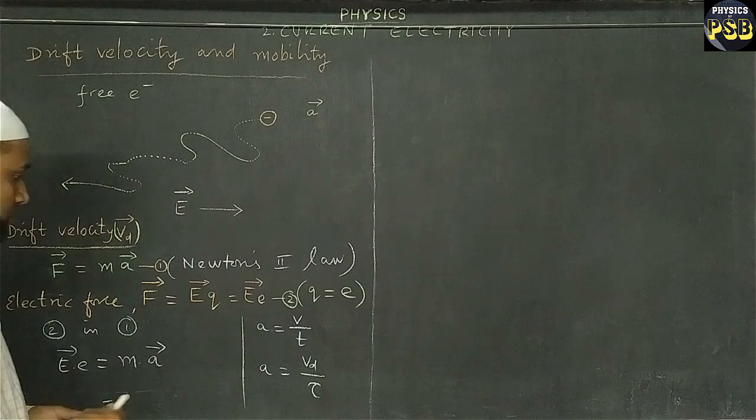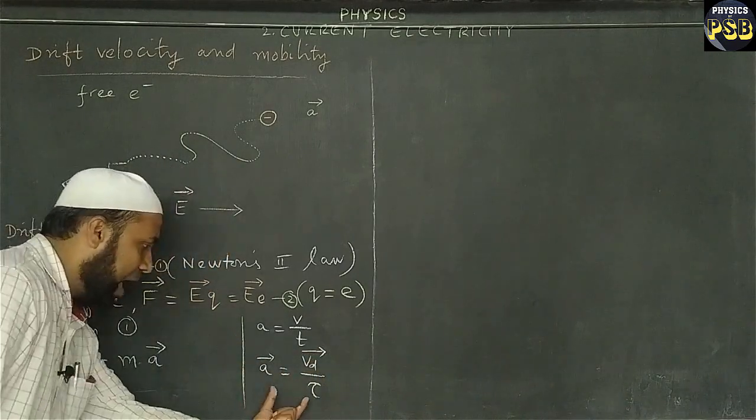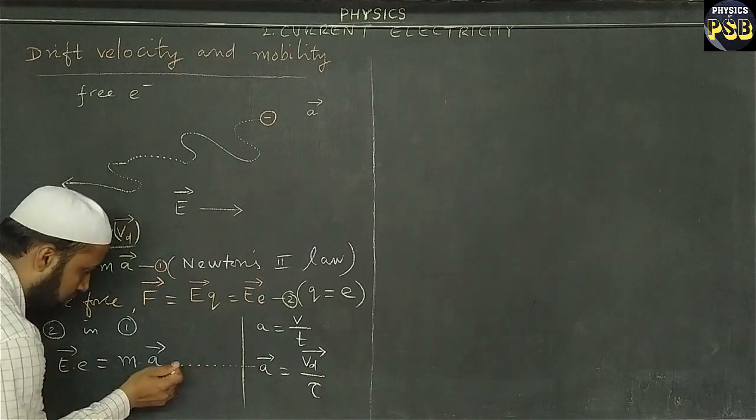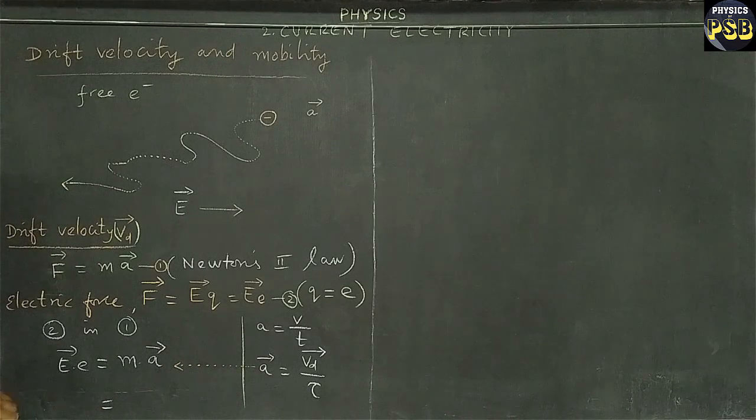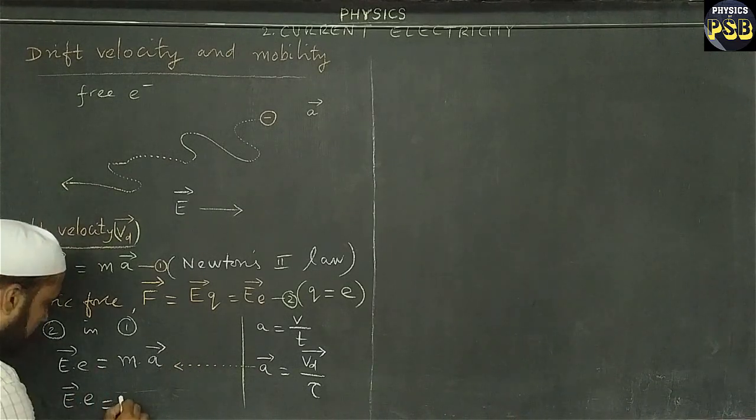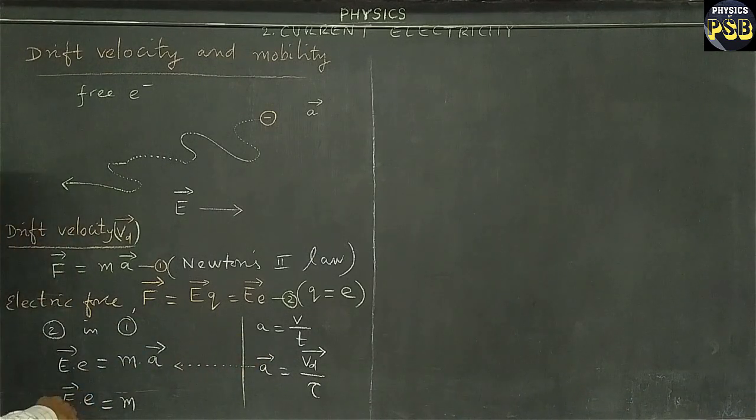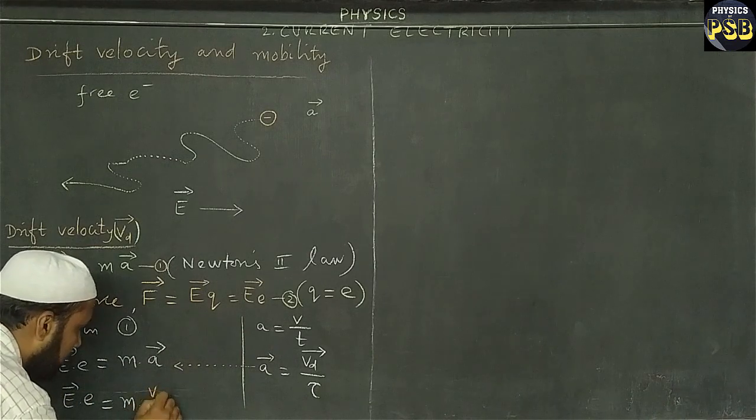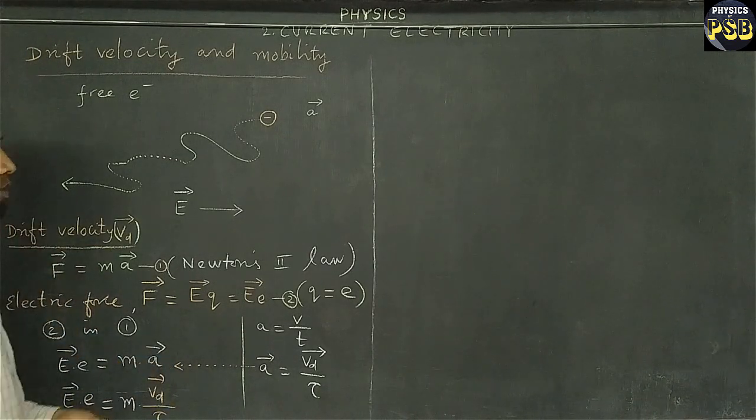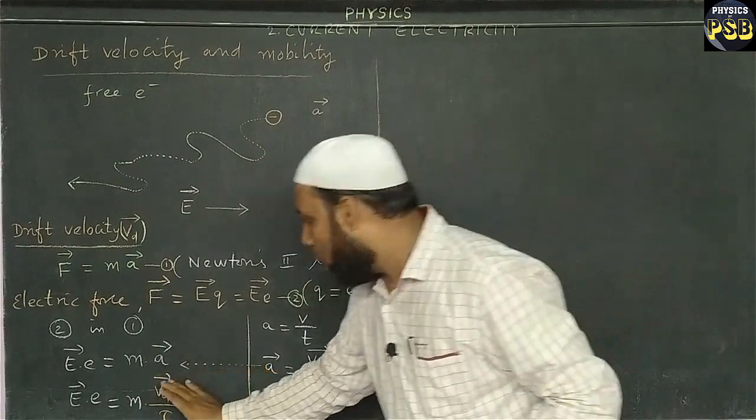Here acceleration is vector quantity and drift velocity is also a vector quantity. I am going to use this here. So I will get this expression: E into small e, M as such. In the place of A vector, I write Vd vector upon tau. My aim is to find the value of Vd.